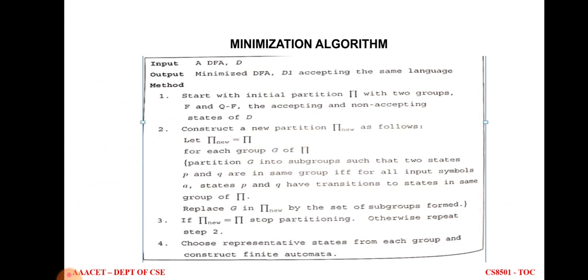In the first step of the algorithm, we start with an initial partition π containing two groups: the first group is F, the final states, and the second group is Q minus F, the non-final states. So we group all final states in one group and all non-final states in another group.